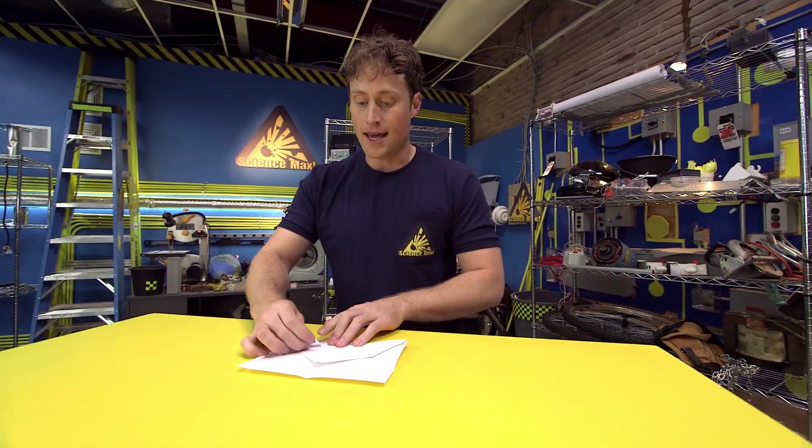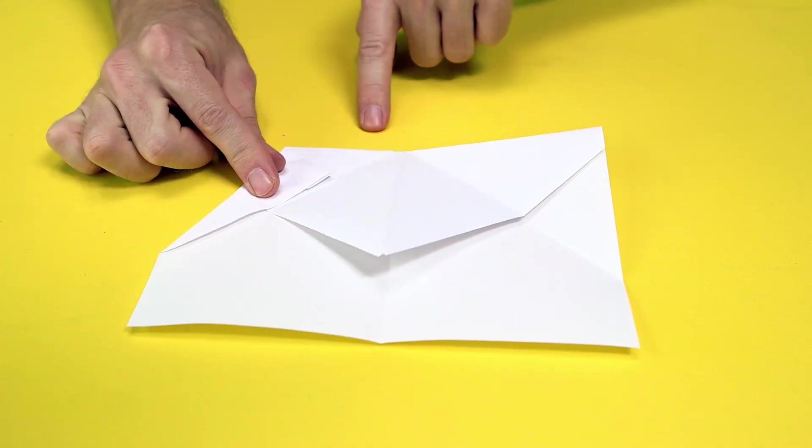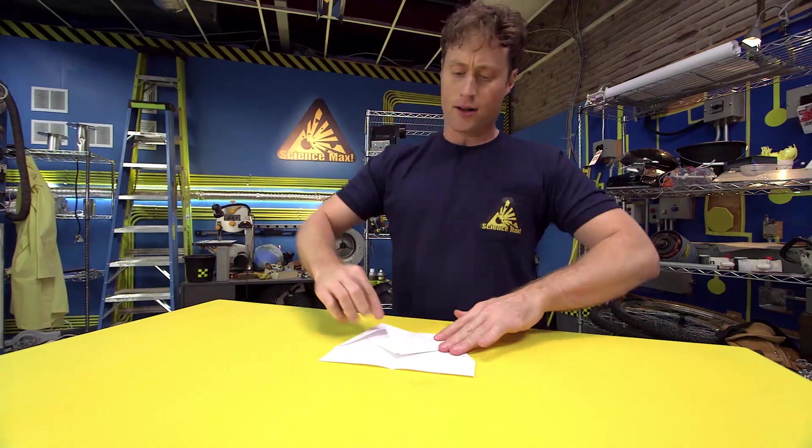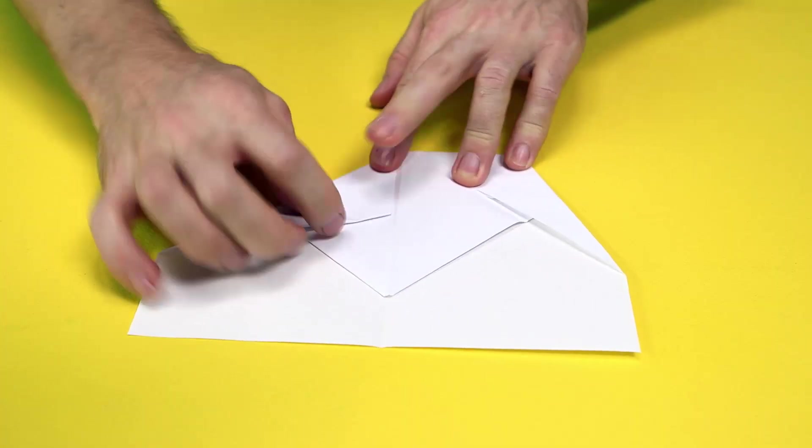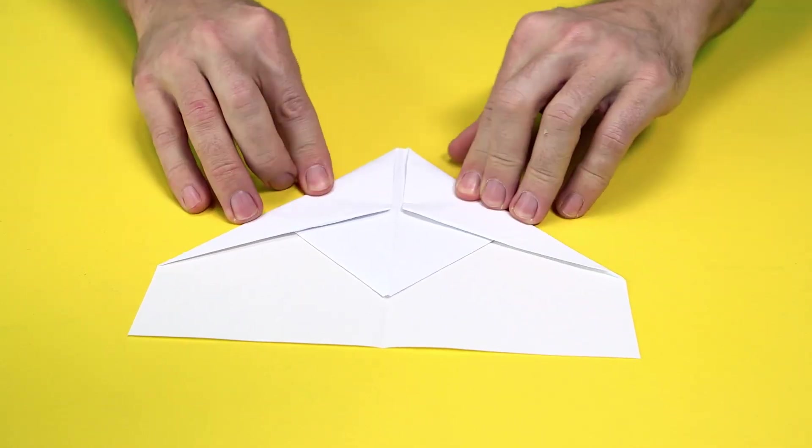Now, we fold again using the guide fold lines you just made. And I like to call this fold the shirt collar fold because it sort of looks like a shirt collar when you fold it. Now, we fold again on the fold that you made before. Folds in like that, and in like that.